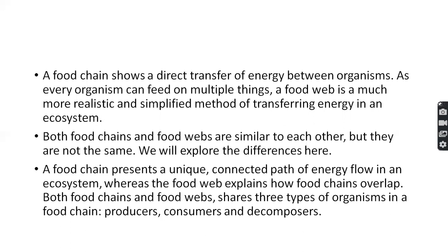Food chains and food webs are similar but they are not the same — they are different from each other. The difference is: a food chain is a unique connected path, whereas a food web is formed when all food chains combine together into one interconnected network.